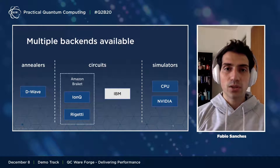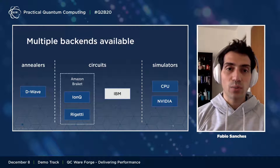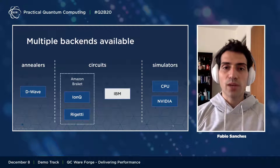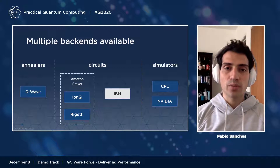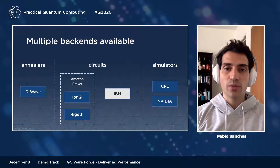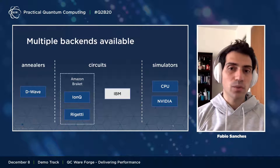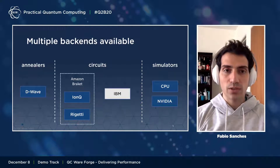These are the backends currently available through Forge. For quantum annealers, we have D-Wave's Advantage machine — the newer machine with over 5,000 qubits — as well as a 2,000-qubit machine. For circuit model hardware, we provide access to IonQ's IonTrap and Rigetti's superconducting device through the Amazon Braket platform. We'll soon enable access to IBM backends as well, and we also have CPU and GPU simulators available.